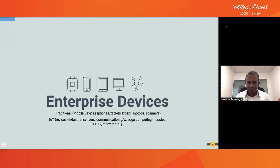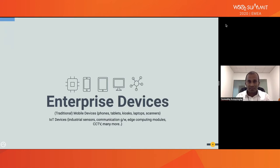The second category of devices I want to highlight is IoT-type devices. This includes various types of industrial sensors, different communication gateways that connect these industrial sensors together, edge computing modules that do some local processing, CCTVs, and many other sensor-type devices that enterprises employ to achieve some form of business functionality.